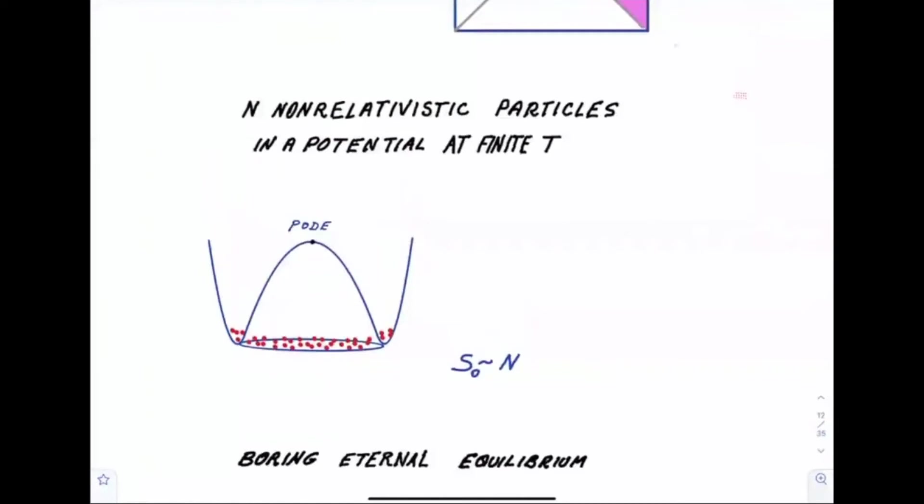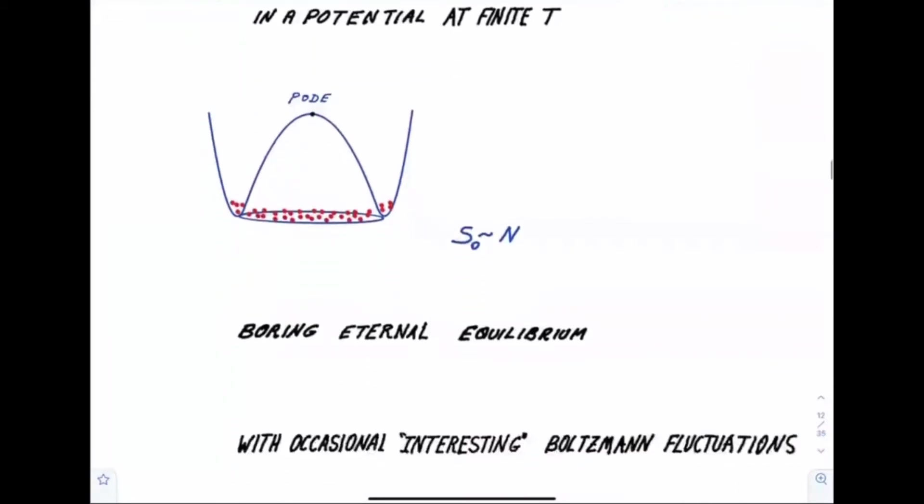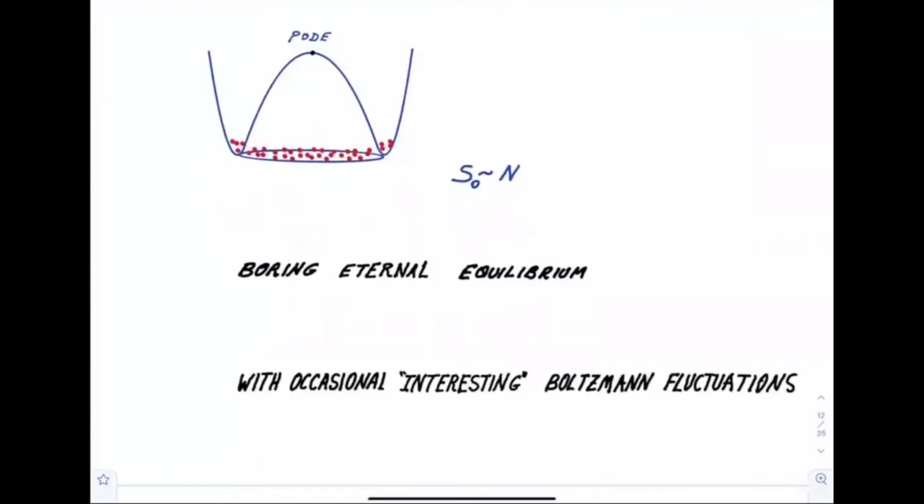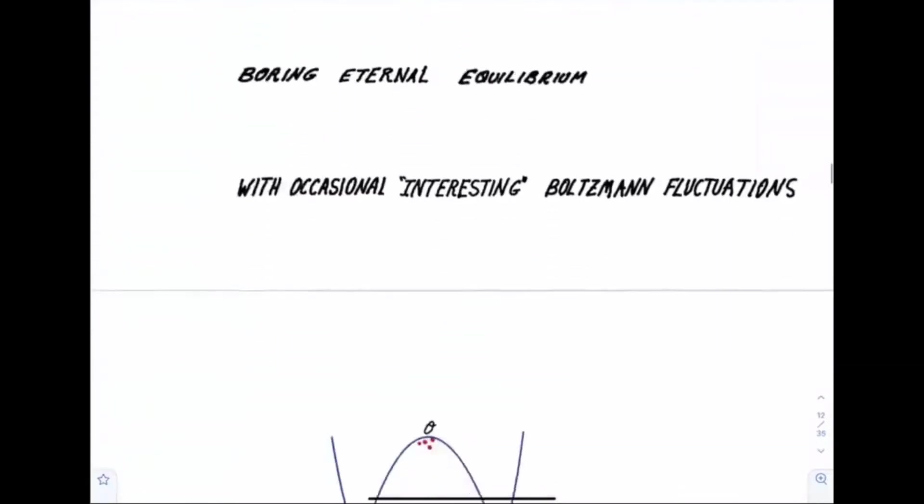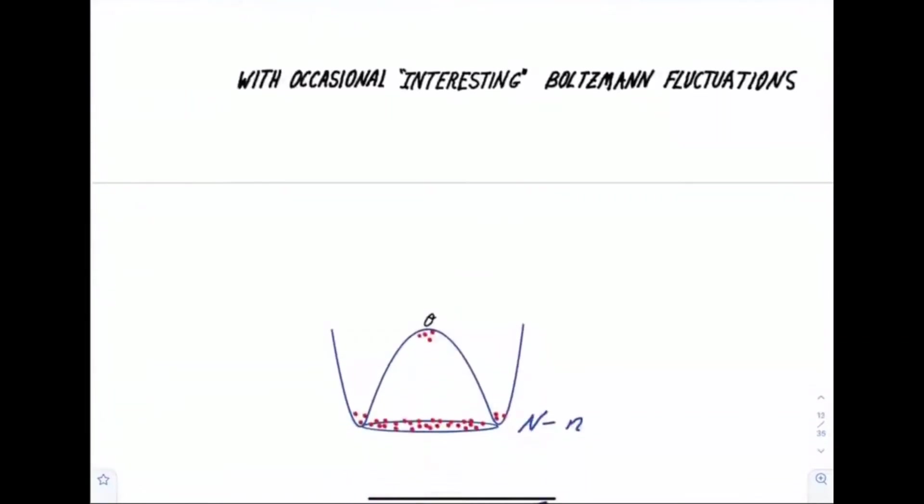The horizon degrees of freedom just exist there in boring, eternal equilibrium. Very boring, but with occasional interesting Boltzmann fluctuations. By a Boltzmann fluctuation, I mean a large-scale fluctuation in which a significant number of degrees of freedom might find themselves up near the pod or someplace else. It doesn't have to be at the pod, but a pod is a convenient place to think about.